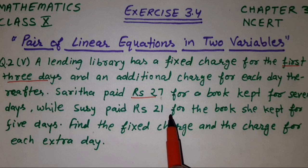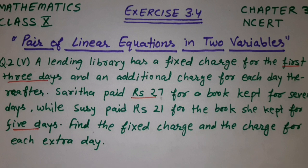Sushi paid 21 rupees — वो 21 rupees pay करती है और book 5 days के लिए रखती है। What is the fixed charge and the charge for each extra day? आपको fixed charge निकालना है और जो extra charge लगेगा वो find out करना है।